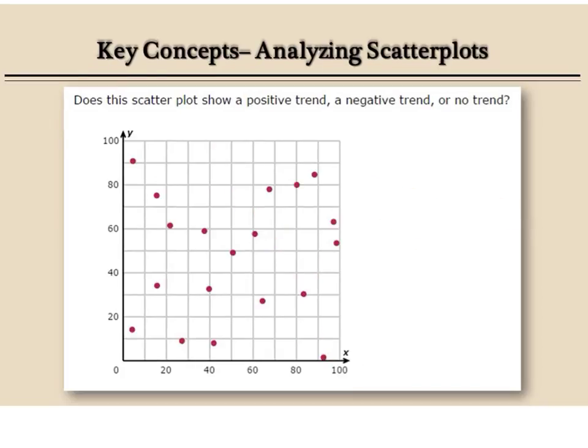Does this scatter plot show a positive trend, a negative trend, or no trend? Well, as you can see, the dots are pretty much all over the place, so this would have no trend.